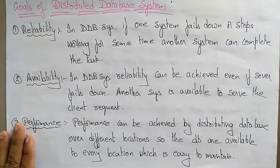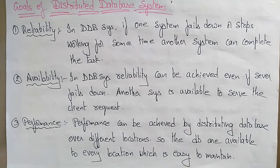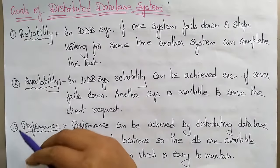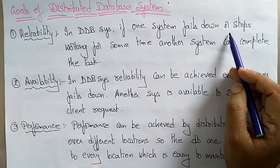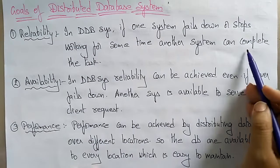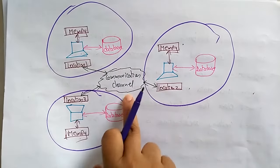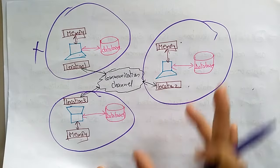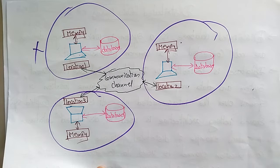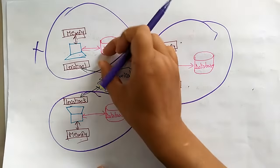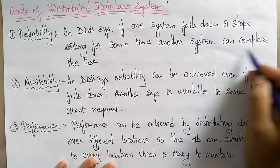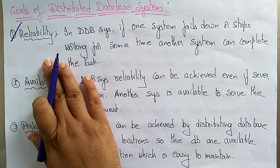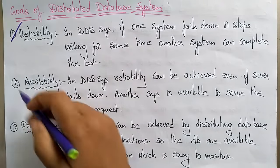Now let's see the goals of a distributed database system — why we require this environment. The first goal is reliability. In a distributed database system, if one system fails or stops working, another system can complete the task. All systems are connected through the communication channel, so if any one system fails, there is no problem — we can complete the task using another system.